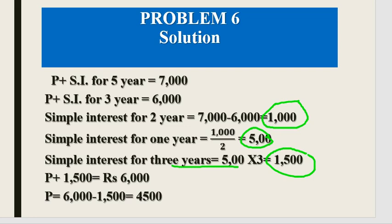Now we find the principal. The amount at 3 years is Rs. 6,000 and the simple interest for 3 years is Rs. 1,500. So the principal = 6,000 − 1,500 = Rs. 4,500.